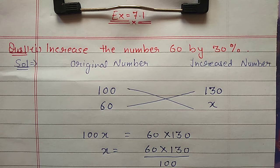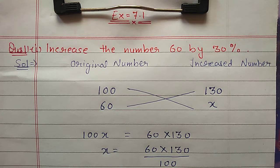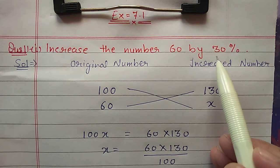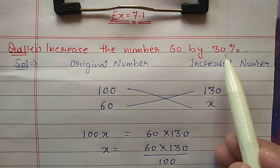Hello students, in this video we are going to discuss Exercise 7.1 from question number 11. The first part is: increase the number 60 by 30 percent. This question we are doing with a shortcut method. When we are talking about percentage, it means we are talking about 100. So here, 30 percent means for 100 rupees we have to increase 30 rupees.